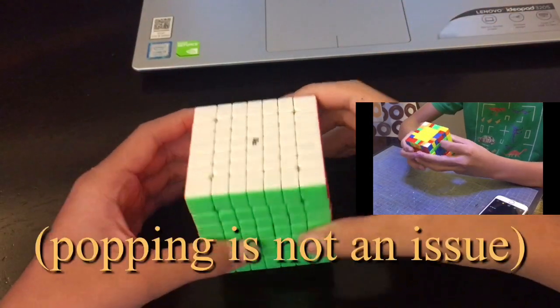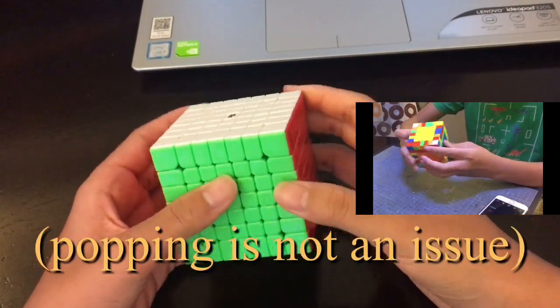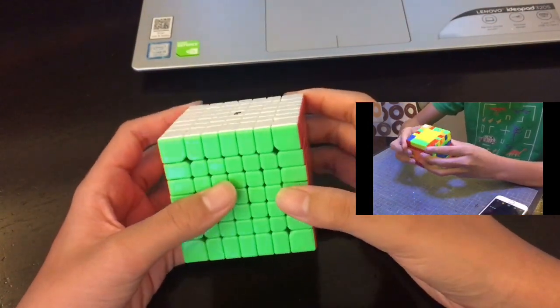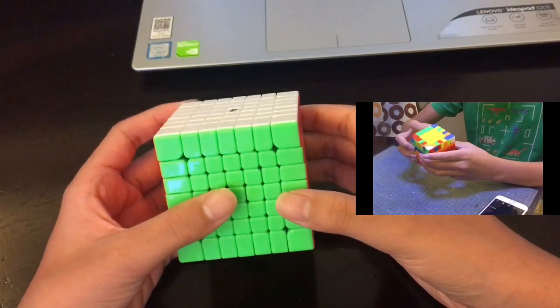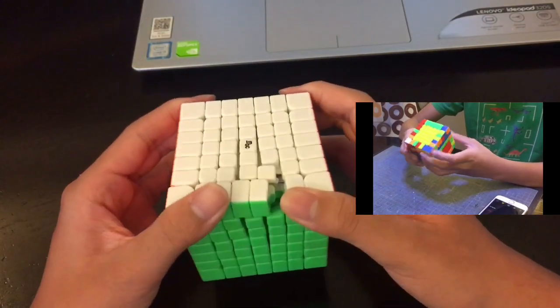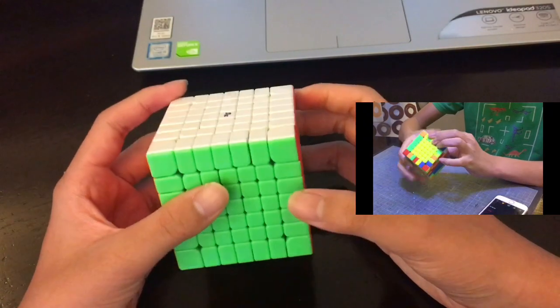If you're concerned about popping, then it doesn't really happen much in the MGC 7x7, unless you're just trying to force corner cut it or you make it very, very loose, so you don't have to worry about pops.